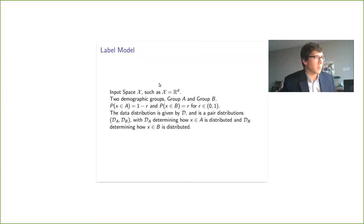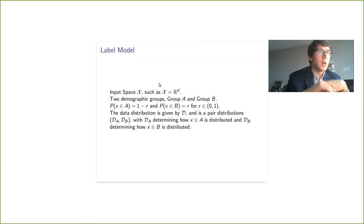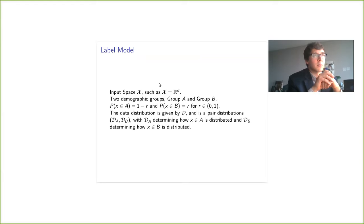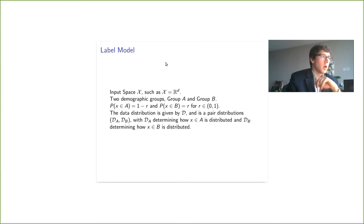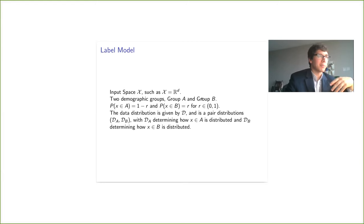Now we're going to get into some of the nitty-gritty of our model. Assume you have an input space X of real vectors — pretty much the standard thing. We have two demographic groups in the population, assumed to be disjoint. There's a data distribution D, which is actually a pair of data distributions. You can think of it as flipping a coin that decides whether a sample is in group A or group B. Once that choice has happened, D_A and D_B determine how features are distributed in each group. Group A with parameter R less than a half is the majority group, and group B is the minority or disadvantaged group that the bias models harm.